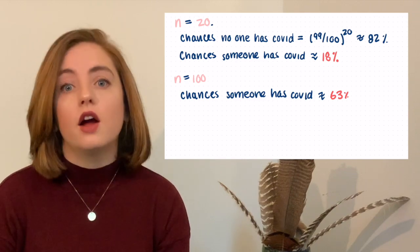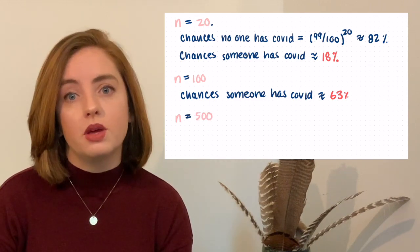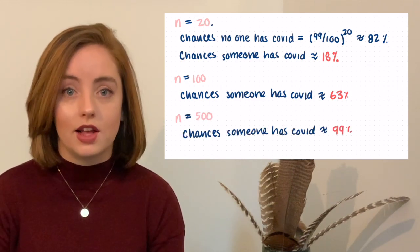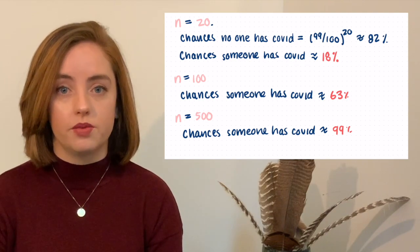At a concert of 500 people, there's a 99% chance that someone there is COVID positive. Here's the formula so you can try it out for yourself for different values of p and n. Remember that p is the likelihood that a randomly selected person in your community has coronavirus and n is the number of people at the gathering.